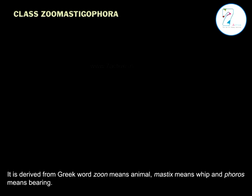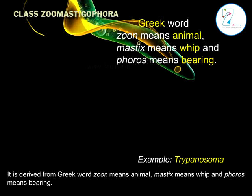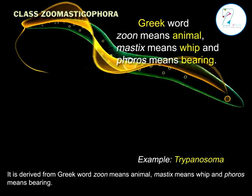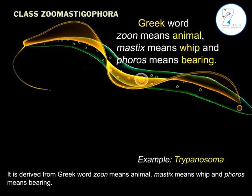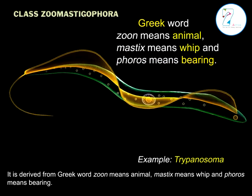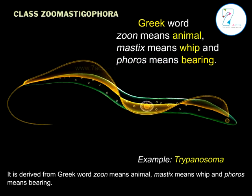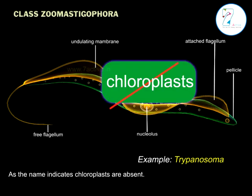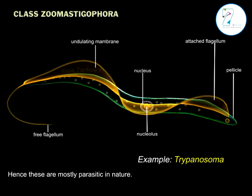Class 2: Zoomastigophora. It is derived from the Greek word zoon, meaning animal; mastix, meaning whip; and phoros, meaning bearing. As the name indicates, chloroplasts are absent. Hence, these are mostly parasitic in nature. Reserve food is glycogen or volutin.